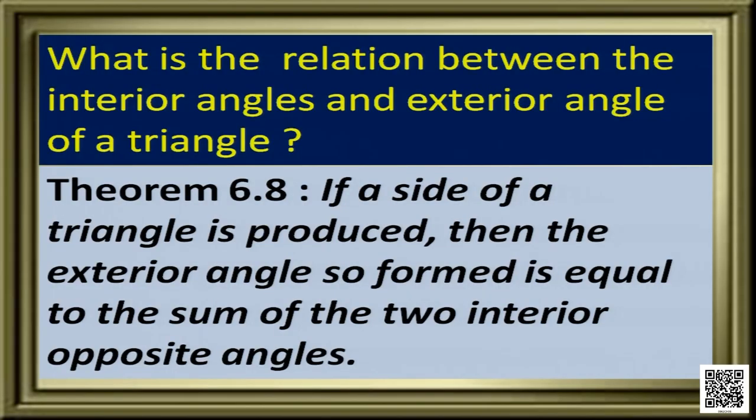As we discussed, the adjacent interior angle is a linear pair of the exterior angle. However, the opposite interior angles have some other relationship which can be stated in this theorem: if a side of a triangle is produced, then the exterior angle so formed is equal to the sum of the two interior opposite angles.